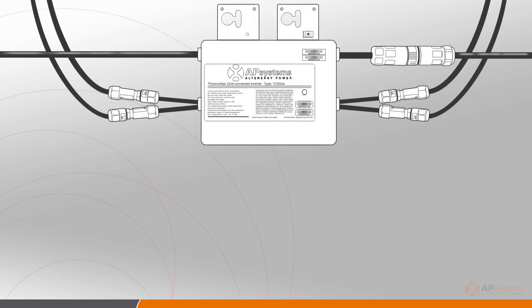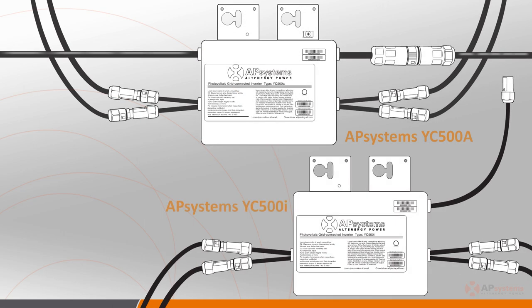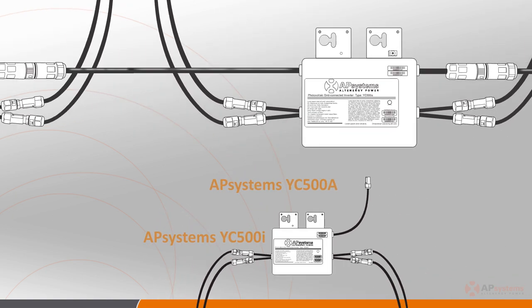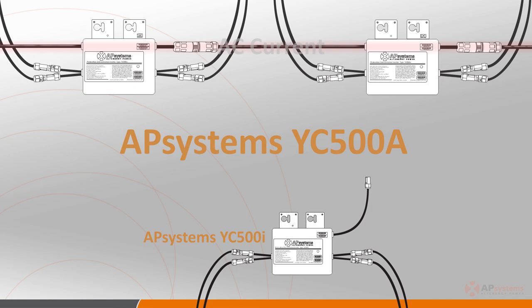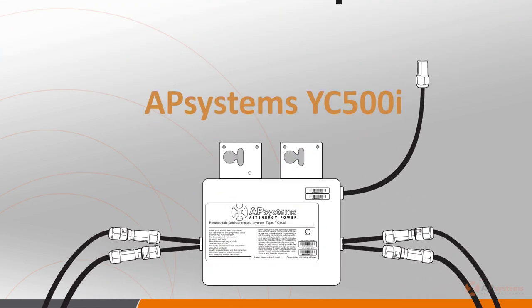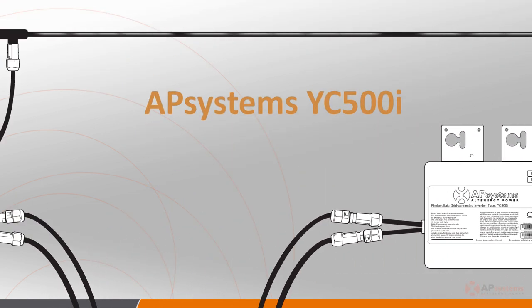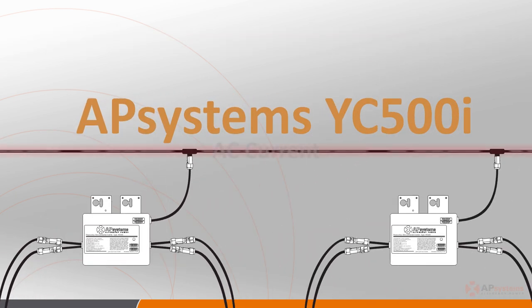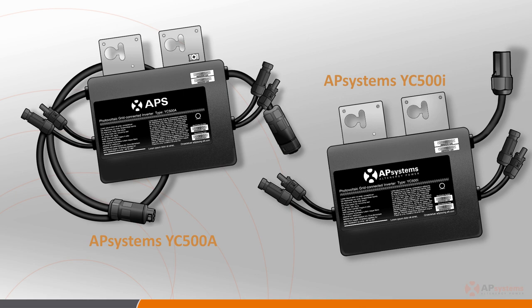Here is a picture of the YC500A and the YC500I showing their associated cabling. It is important to note that the YC500A are daisy-chained together in a series for AC distribution, while the YC500I employs a trunk cable. The choice comes down to installer cabling preferences. There are also differences in grounding, which we'll address later.